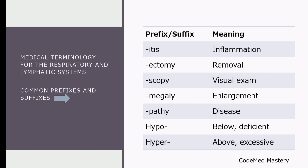Now let us move on to the prefixes and suffixes related to the respiratory and lymphatic systems. Itis refers to inflammation, ectomy is removal, scopy is visual exam, and megaly means enlargement — for example, hepatomegaly, that is enlargement of the liver. Next is pathy, which means disease; hypo is below or deficient; and hyper means above or excessive.